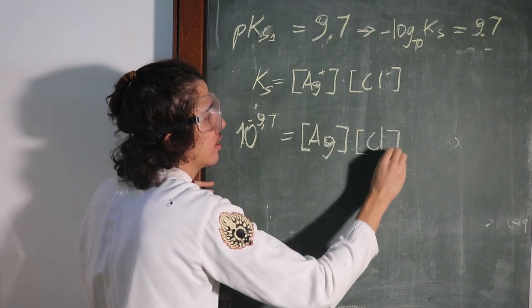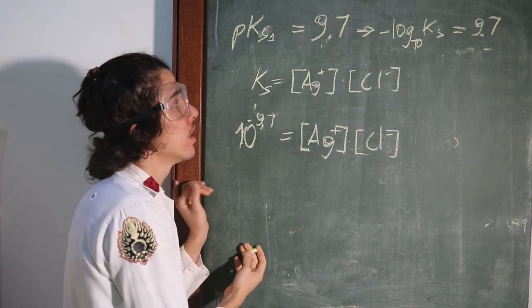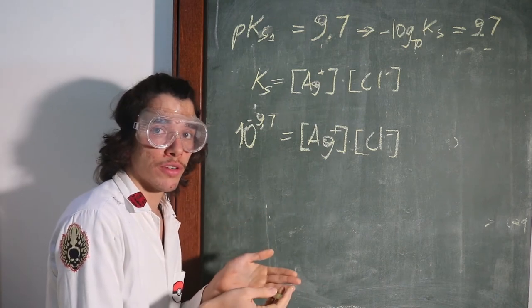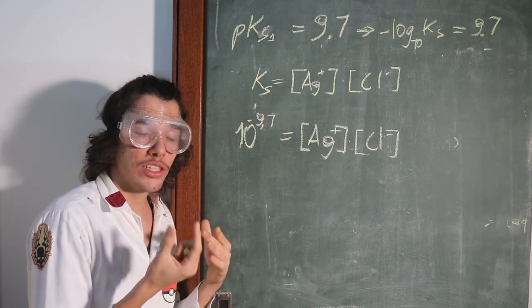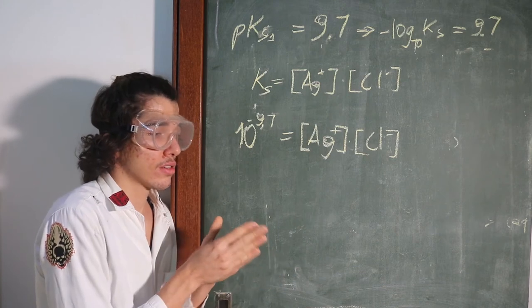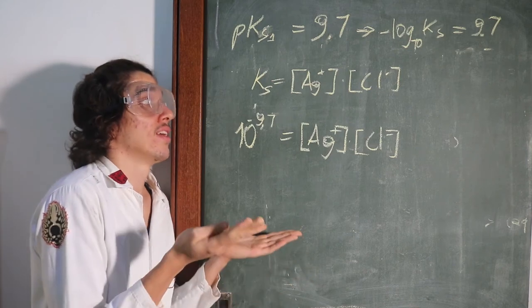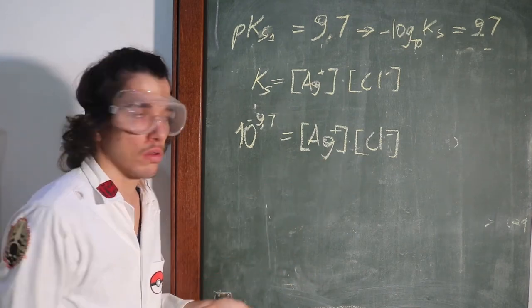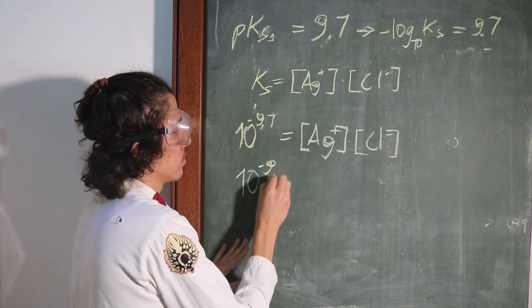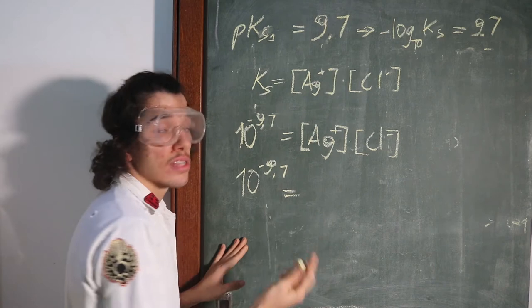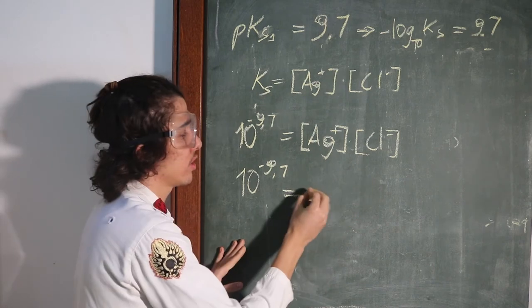But since when we are dissolving the salt, each mole of salt gives one mole of Ag+ and one mole of Cl-, its concentration must be equal. Then the next thing here, I'm going to say that Ag concentration is going to be equal to Cl concentration.